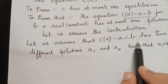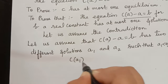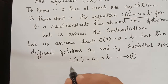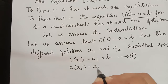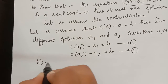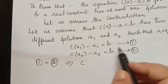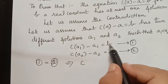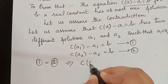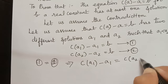Because A1 is a solution of this equation, it will satisfy it. So we get C of A1 minus A1 equal to B. Also, A2 is a solution, so we get C of A2 minus A2 equal to B. From these two equations, since both equal B, we have C of A1 minus A1 equal to C of A2 minus A2. Let this be equation 3.